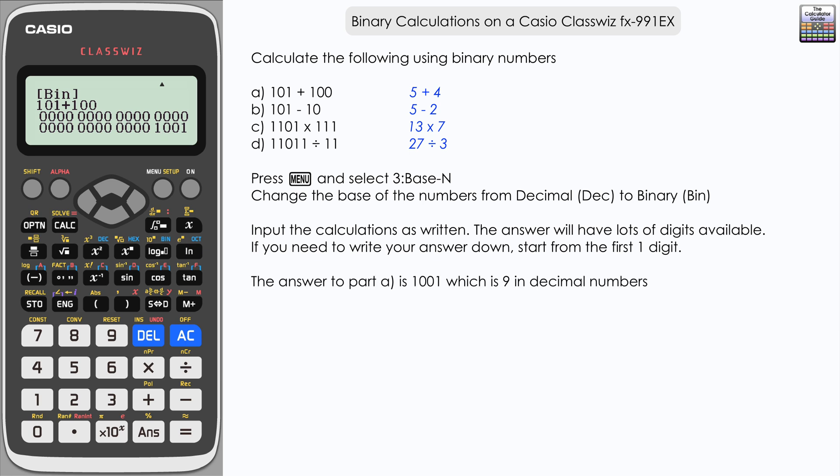So it's 1001 for our answer here. If we did want to see what the decimal equivalent of that was we could just change here to decimal. You can see that that's nine. Obviously that corresponds well with the decimal calculation which is really five plus four. Let's switch back to binary.